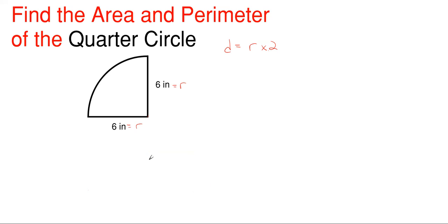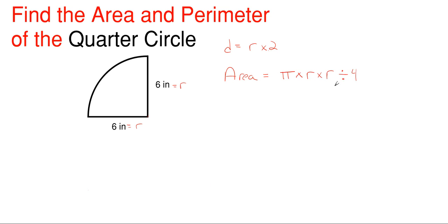The area for a quarter circle will just be the overall area of a circle divided by four, since you're cutting it into four equal portions. So the area would be pi times r times r, divided by four — or you could write it as pi times r squared over four.